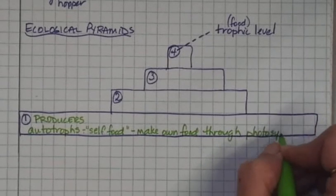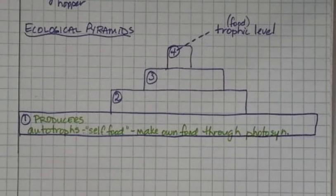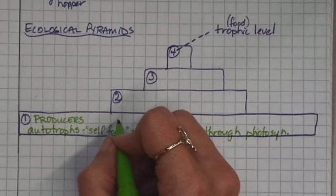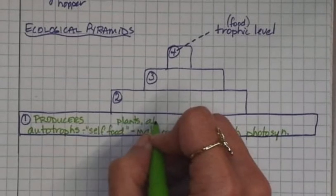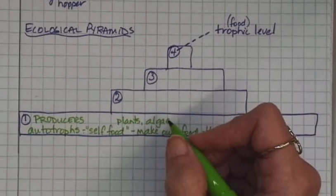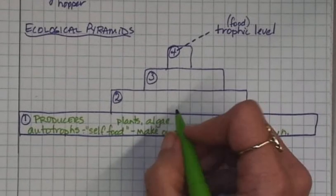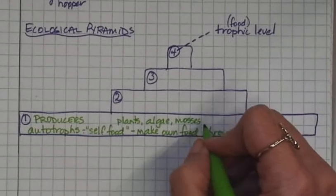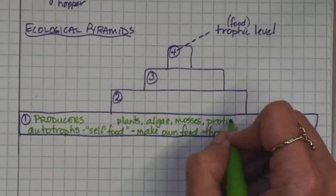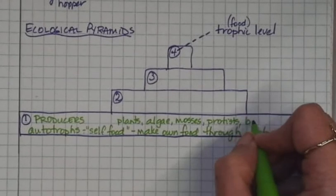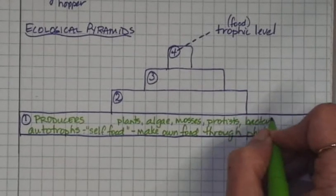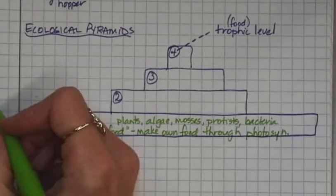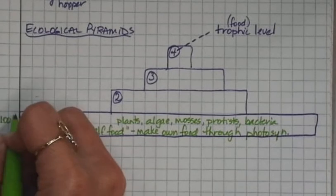I'm going to abbreviate photosynthesis as photosyn. I think you guys can get this. Examples of these: plants, algae, mosses, any of the green things like that that you think of. Some protists, not all of them, but some protists, some bacteria, cyanobacteria, can make their own food. They can have chloroplasts in them. So these are examples of this. This is where you have 100% of the energy.